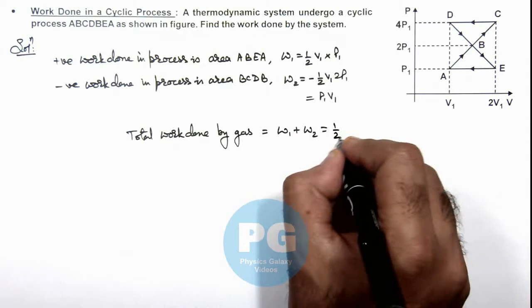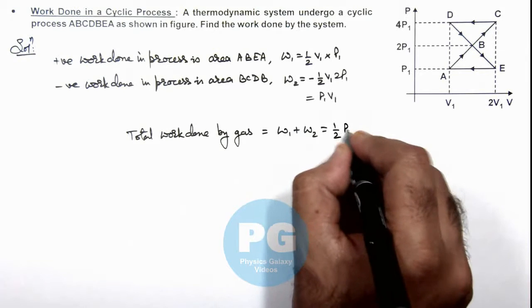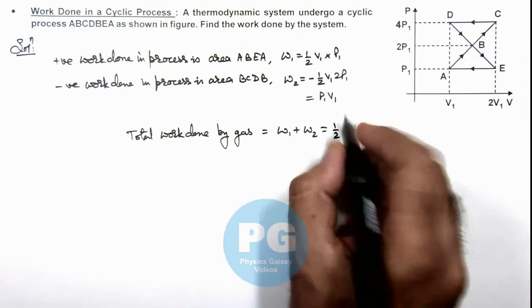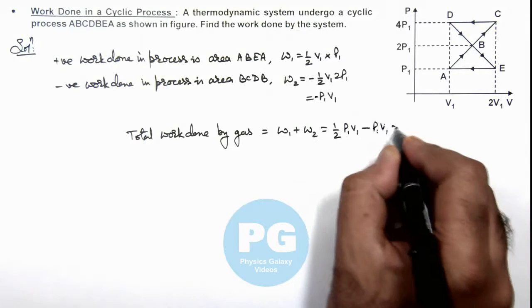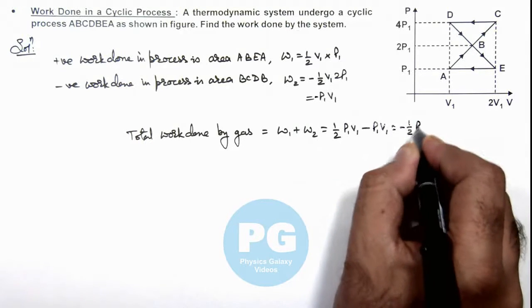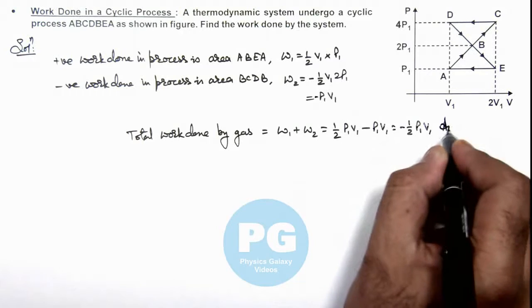which is half P₁V₁ minus P₁V₁. So this is minus half P₁V₁, that is the result of this problem.